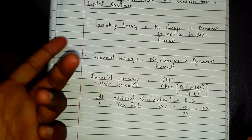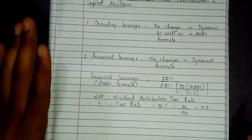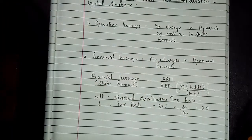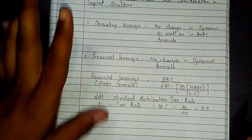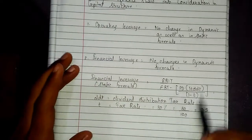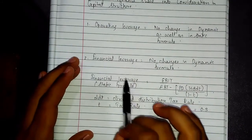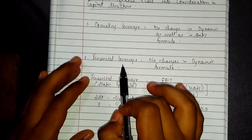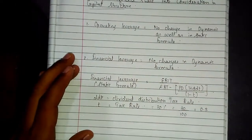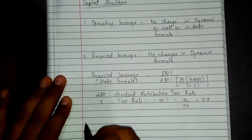If the question includes preference shares in the capital structure, you first need to find out the static formula to get the financial leverage. Whatever number comes — say it comes to 2 times — you then substitute that in place of the degree of financial leverage and apply the dynamic formula, which remains the same.